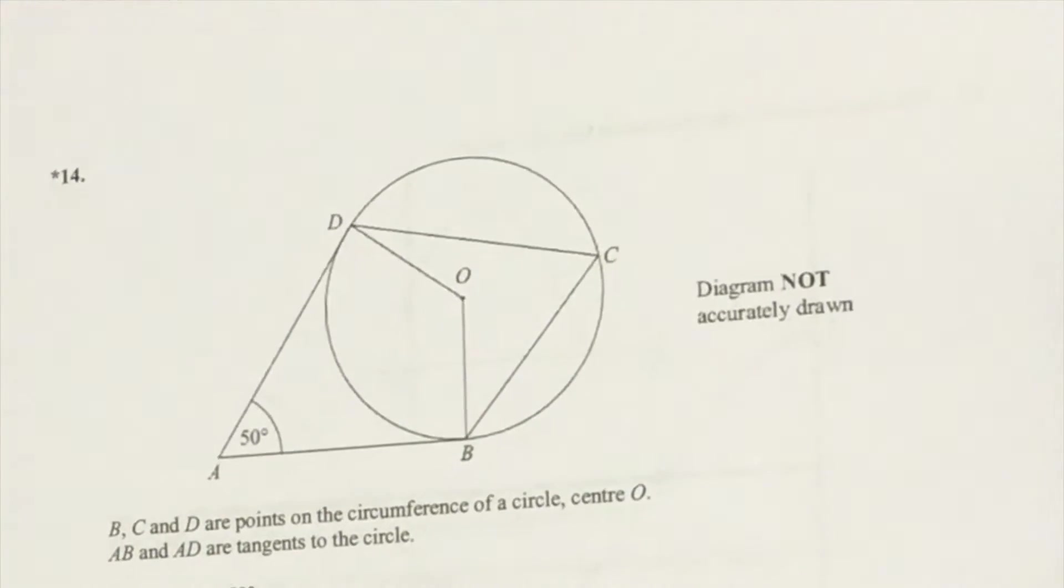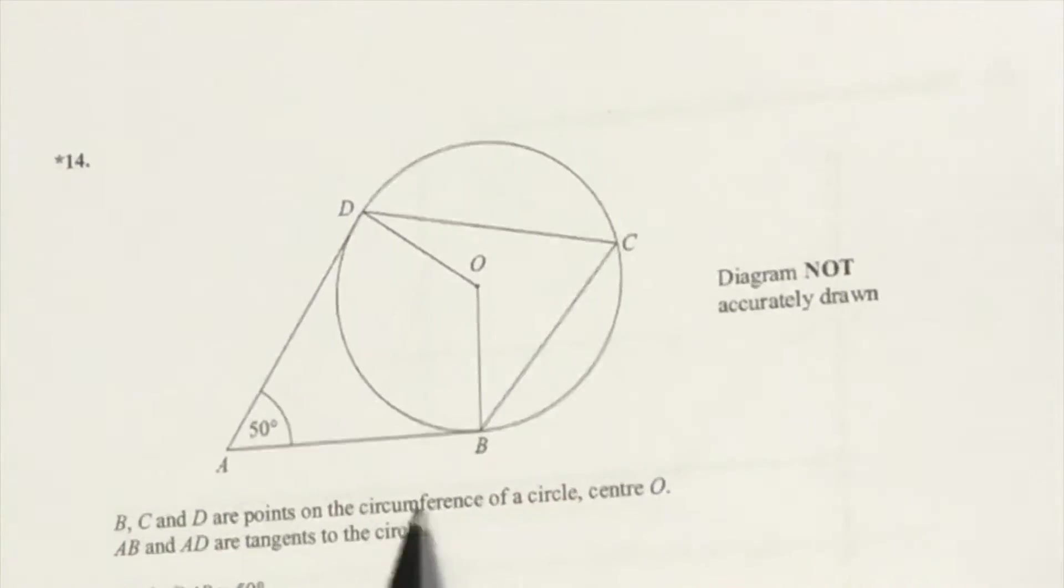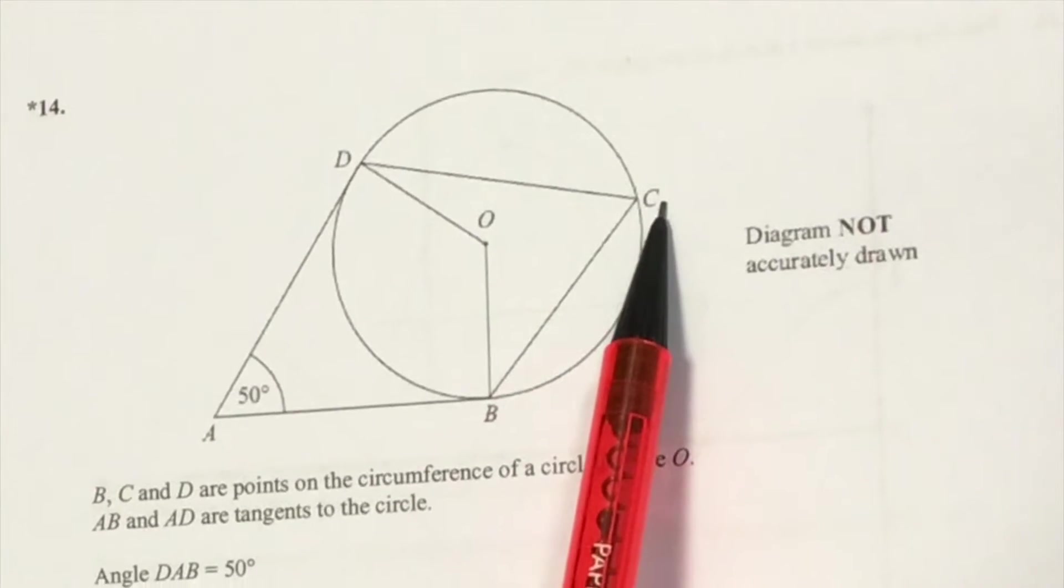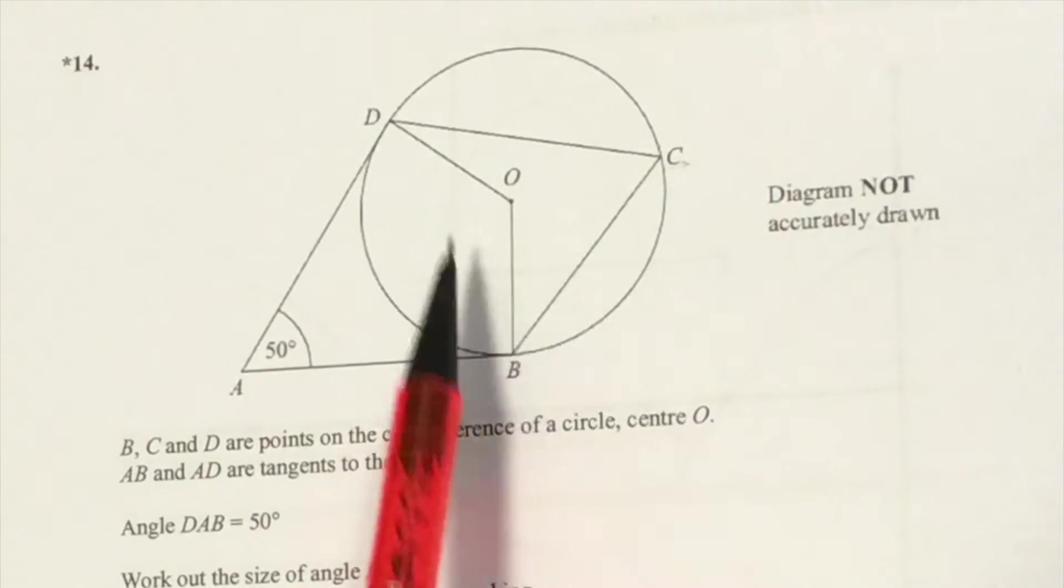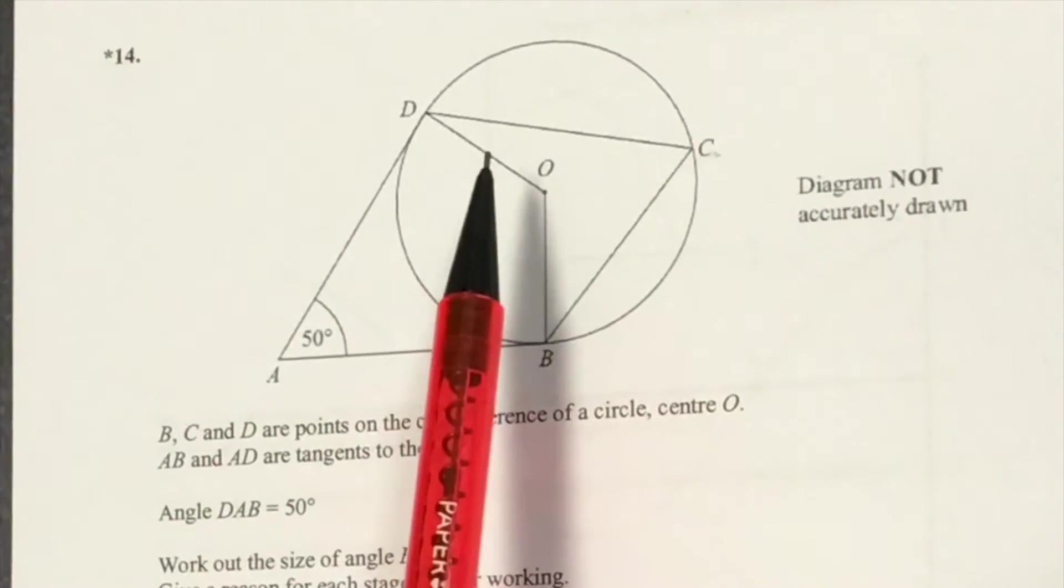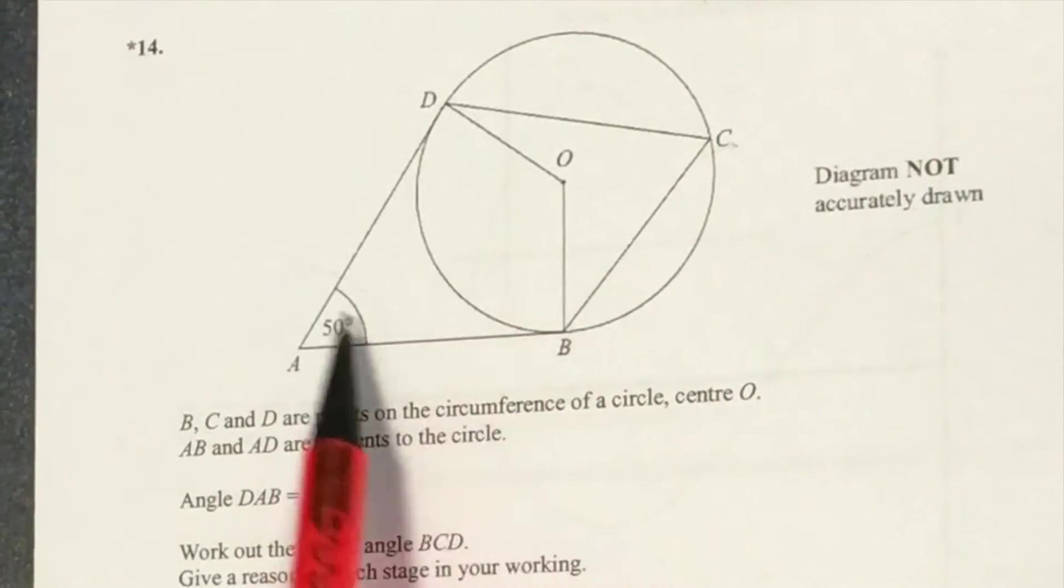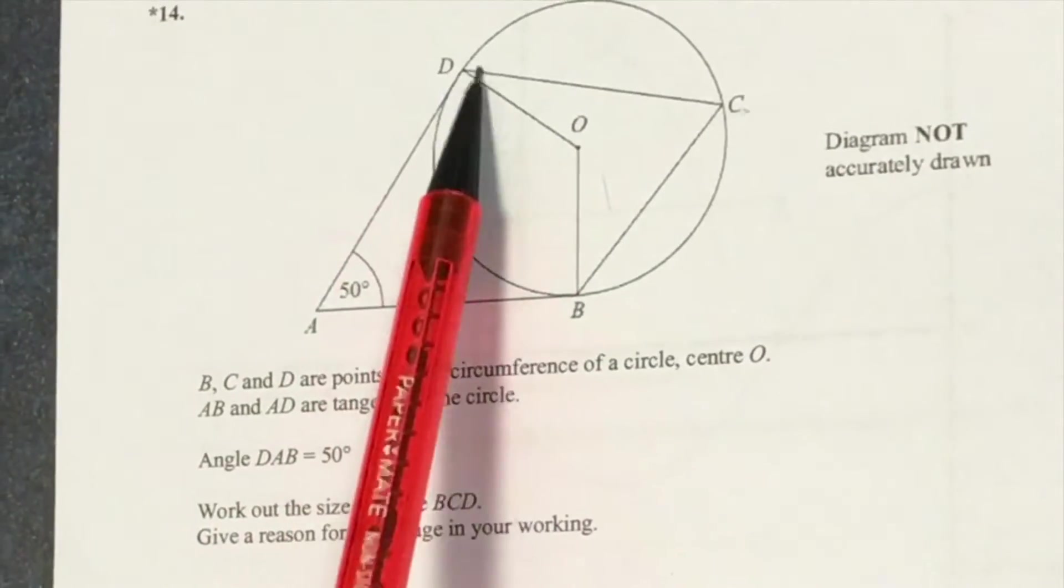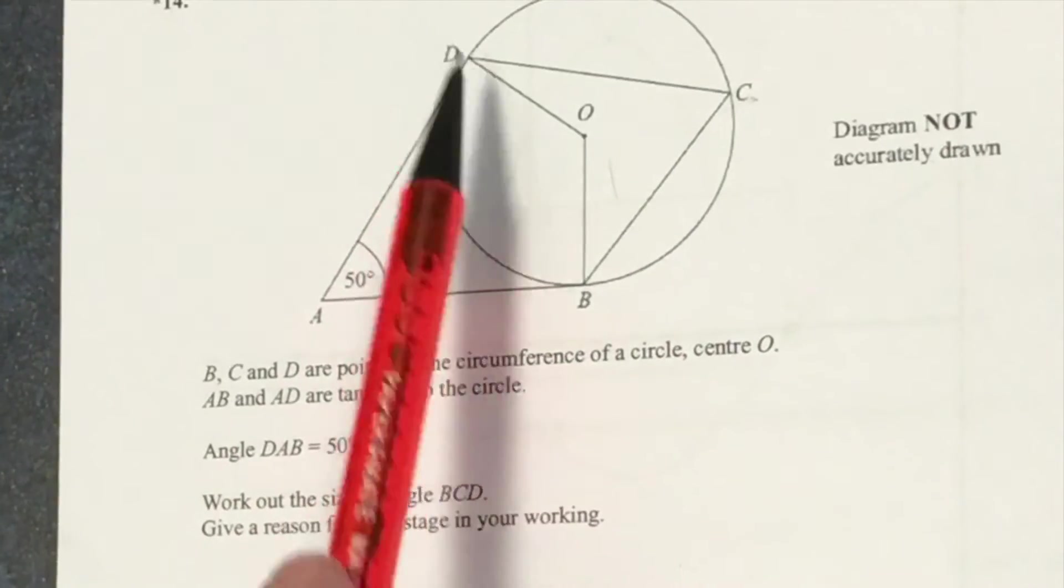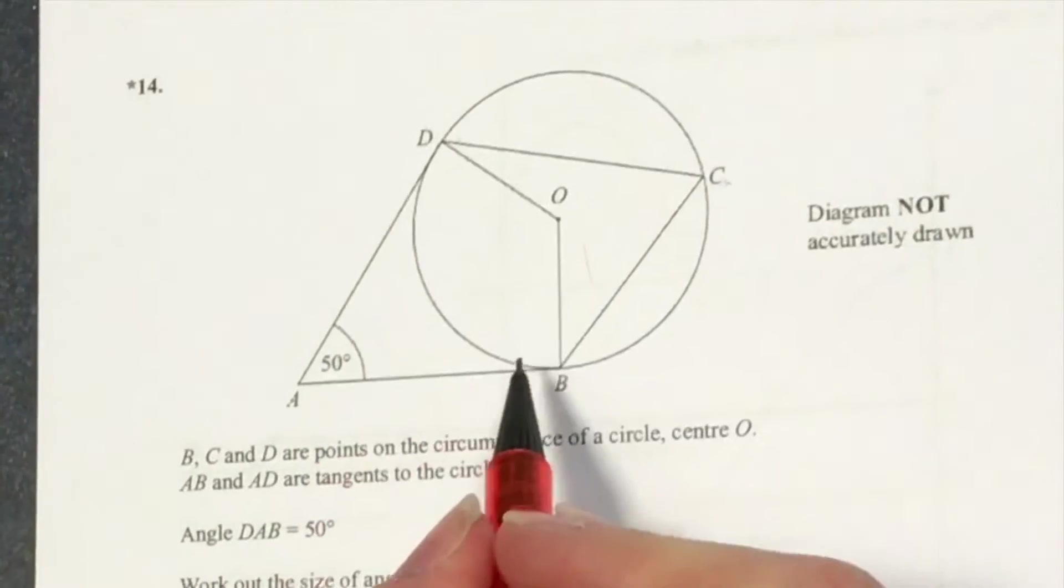For this circle theorem, we're trying to find angle C. This circle theorem has a cyclic quadrilateral, and all the angles in this cyclic quadrilateral add up to 360. Opposite angles add up to 180, and you can see that angles D and B are 90 degree angles.